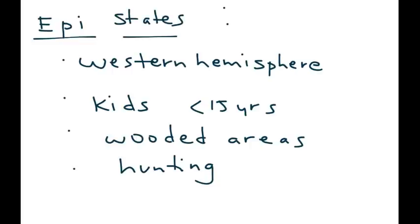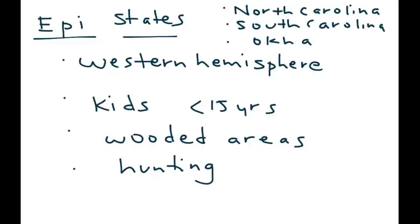There are certain states in the United States that they tend to mention in clinical vignettes. They will mention North Carolina, South Carolina, and also they sometimes mention Oklahoma. So just keep those states in mind and keep in mind that this is really a medical condition that tends to occur when people go out into these wooded areas. That will help you in the clinical vignettes that you encounter on licensing exams.